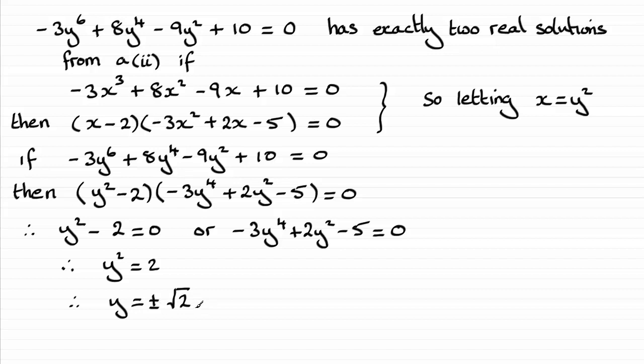So what we have here are two real solutions. So that seems to suggest then that if we've got to show that the equation up here has exactly two real solutions, I would expect this equation to have no solutions.